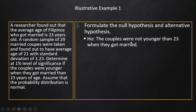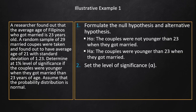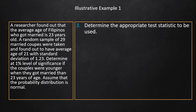The alternative hypothesis states that the couples were younger than 23 when they got married. The level of significance based on our data is one percent, so our alpha level is 0.01.